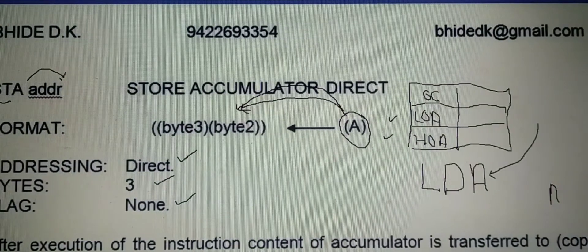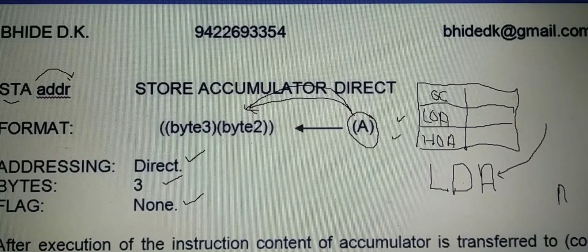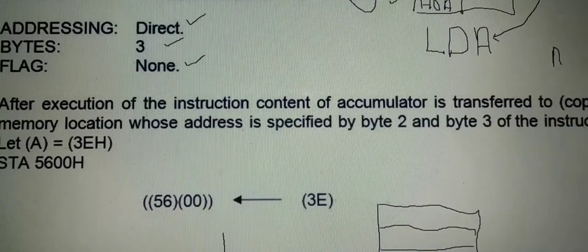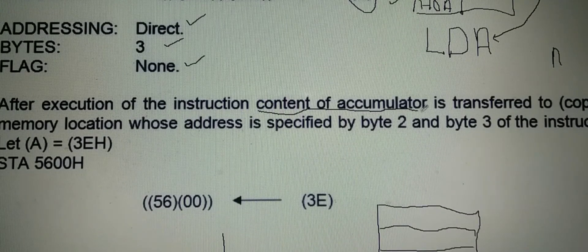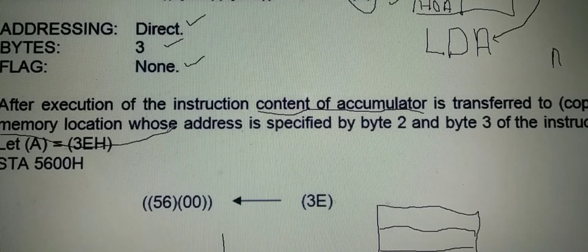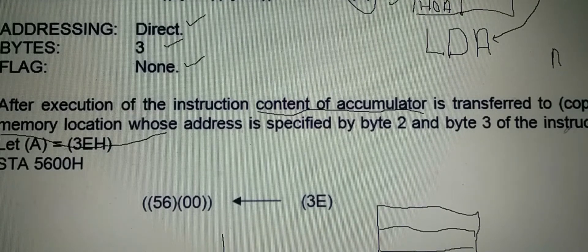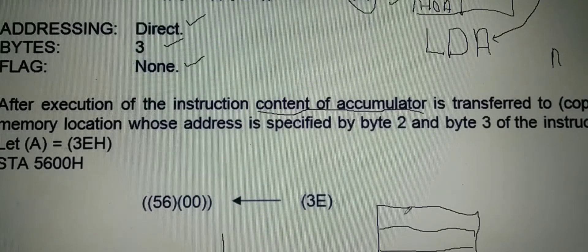What is the explanation of this instruction? After execution of the instruction, the content of the accumulator — whatever number is present in the accumulator — it is transferred to or copied to the memory location whose address is specified by byte 2 and byte 3 of the instruction.